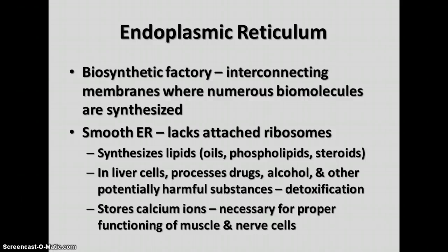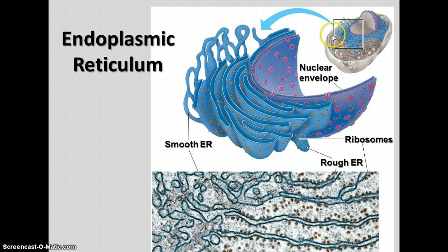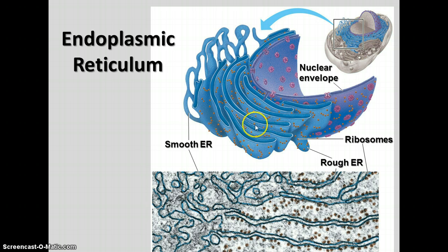The smooth ER in liver cells processes drugs, alcohol, and other potentially harmful substances in a process called detoxification to make them less harmful to the cell. The smooth ER also stores ions like calcium ions that are necessary for the proper functioning of muscle and nerve cells. This diagram shows the endomembrane system including the ER, starting right outside the nuclear envelope as a series of folded membranes and channels. The smooth ER is a bit farther out and often looks like tubes rather than channels.